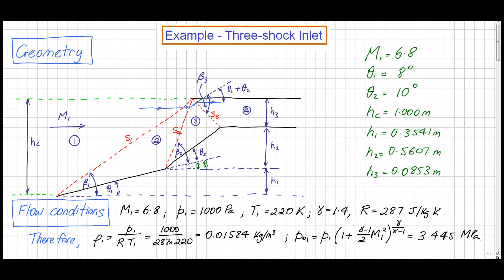This is where we finished off at the end of our last video. We'd formulated the problem and got our flow conditions. The first step is to look at what happens to the flow as it passes across the first shockwave. We'll calculate the conditions at state 2, then across the second shockwave to get to state 3, then across the third shockwave to get to state 4. We start now by looking at the first shockwave, S1.